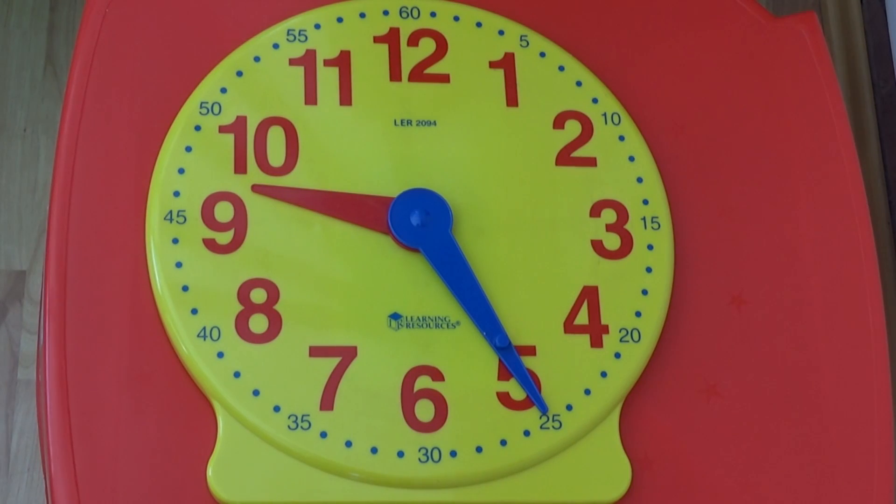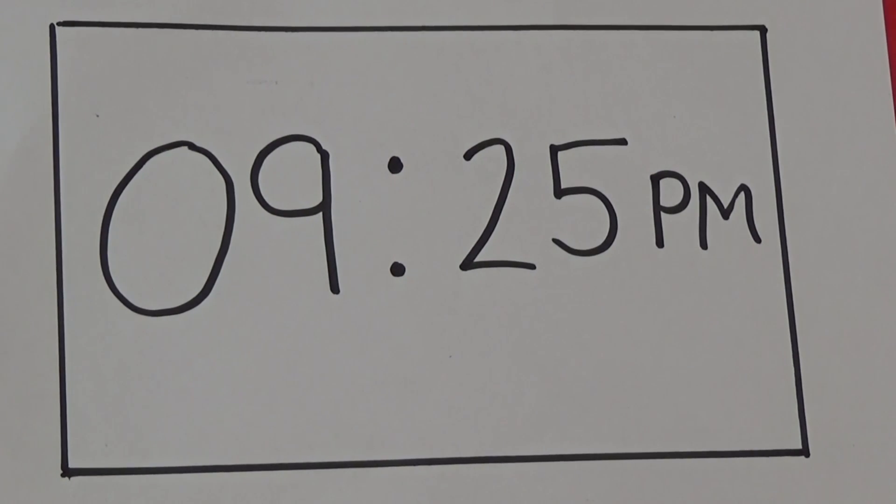For our next one the hour hand is pointing at between the 9 and the 10, and the minutes hand is pointing at the 25. So we know the time is 25 past 9. As we write the hours first the time is between 9 and 10, so the hour we are on is 9.